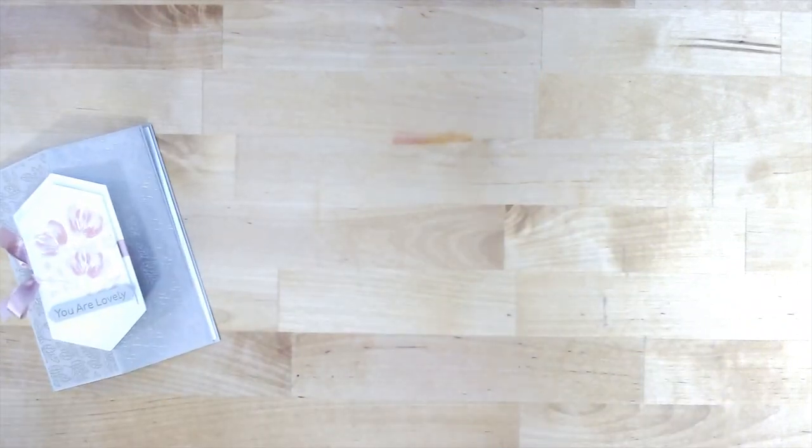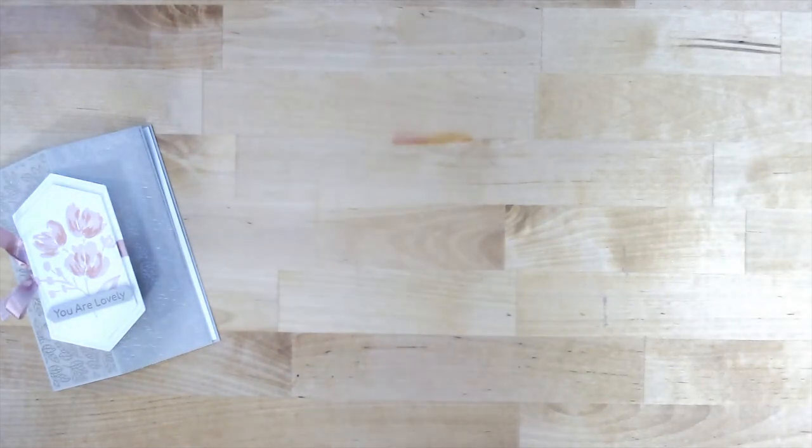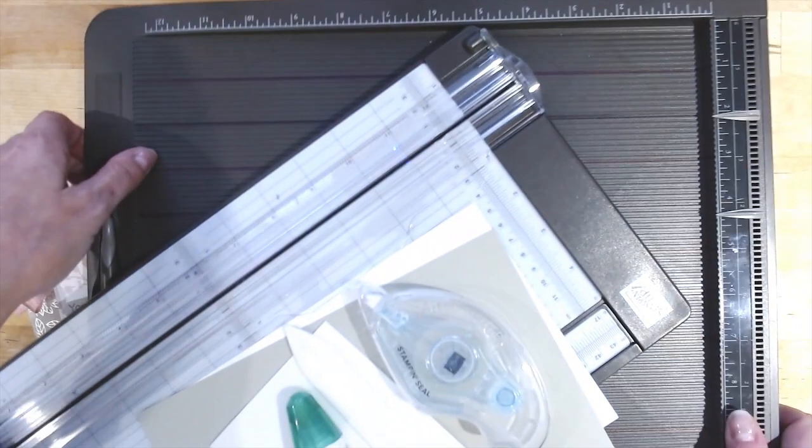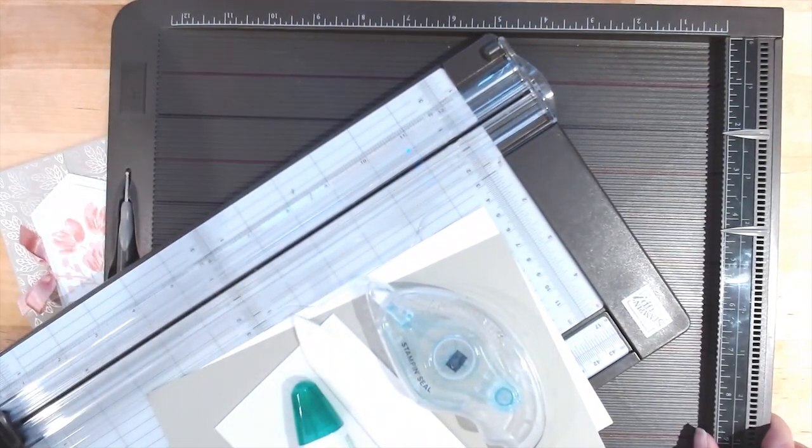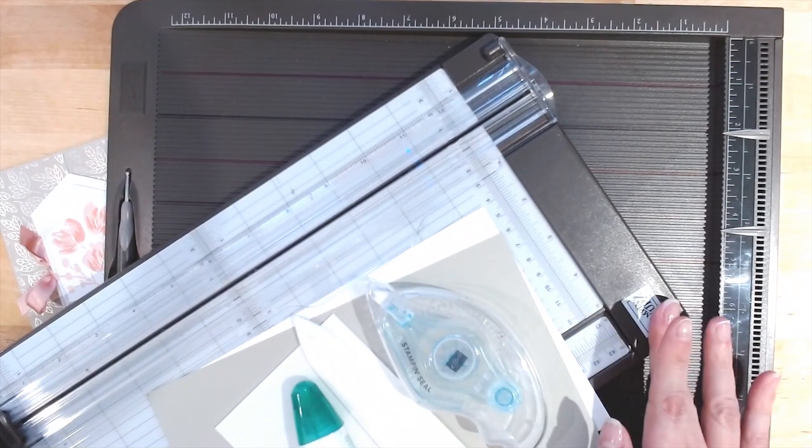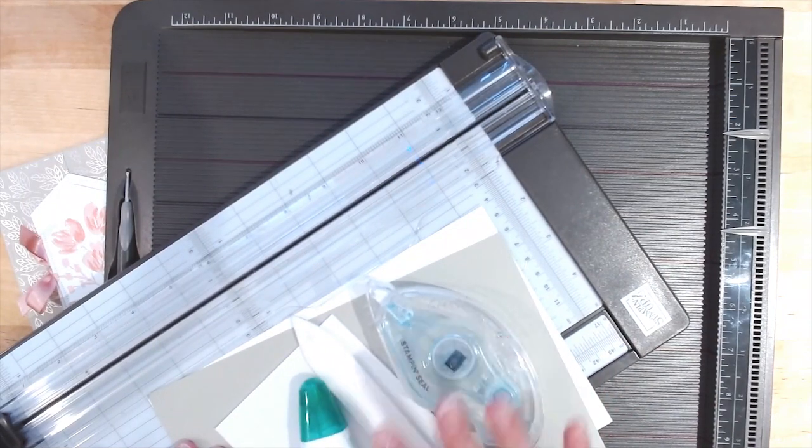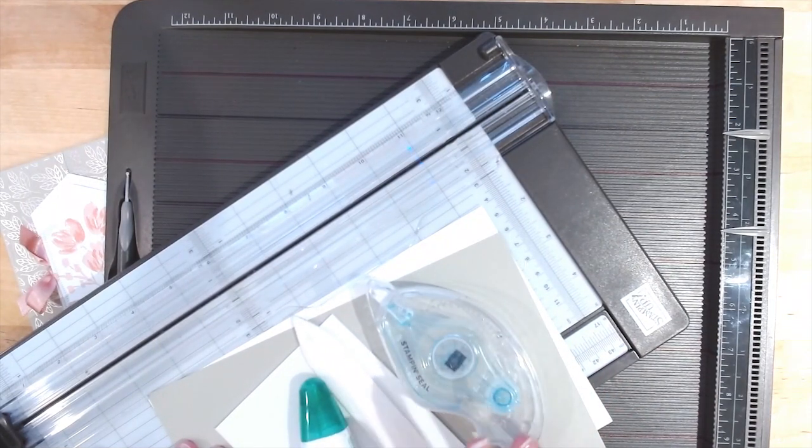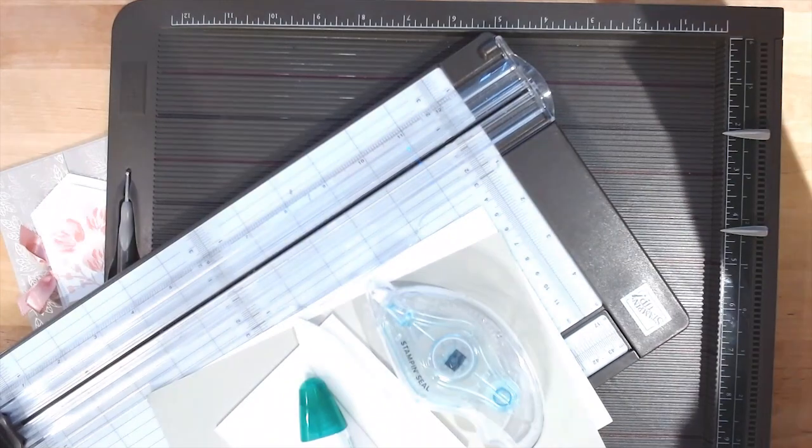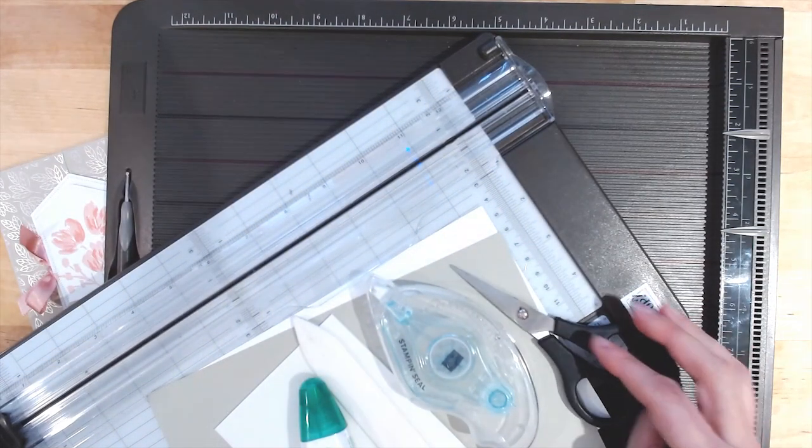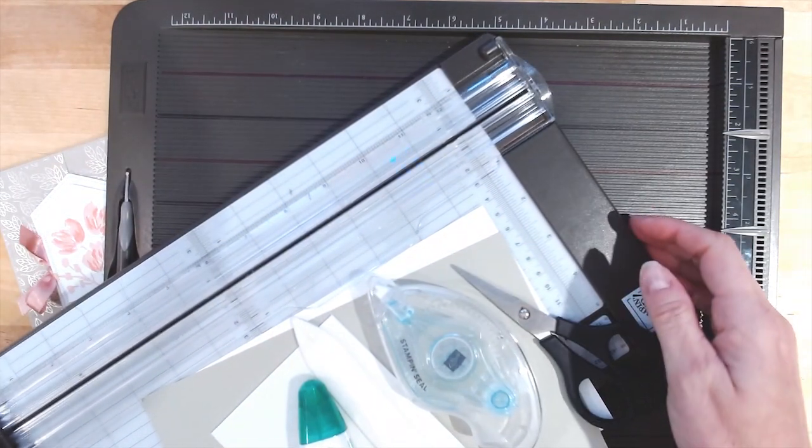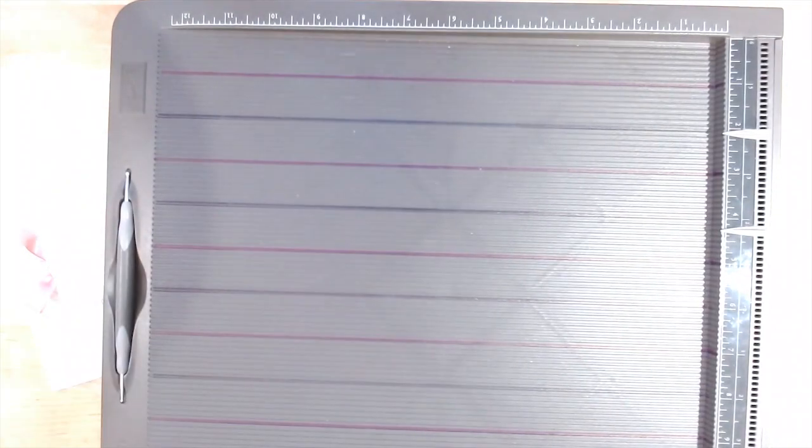So let's first pull in our supplies. You are going to need a scoring tool, a trimmer, some cardstock, some adhesive of your choice and a bone folder. And I forgot a pair of scissors. Let's pull those in as well. You will need a pair of scissors, at least for decorating. Let's go ahead and get started.